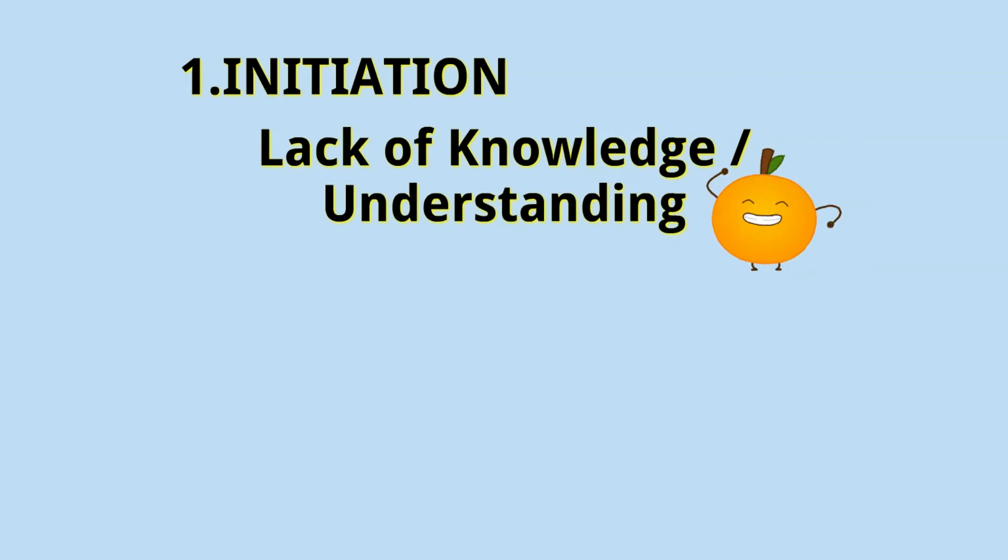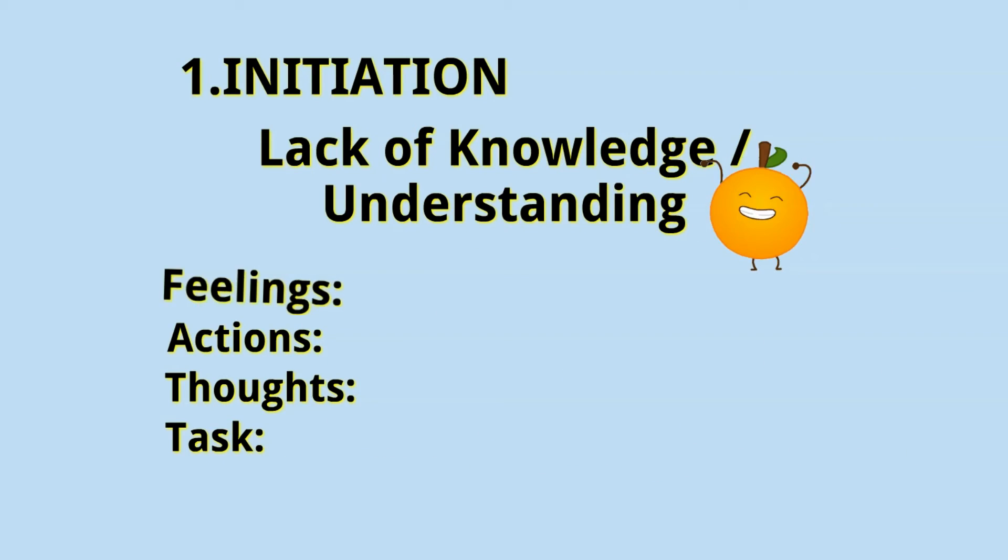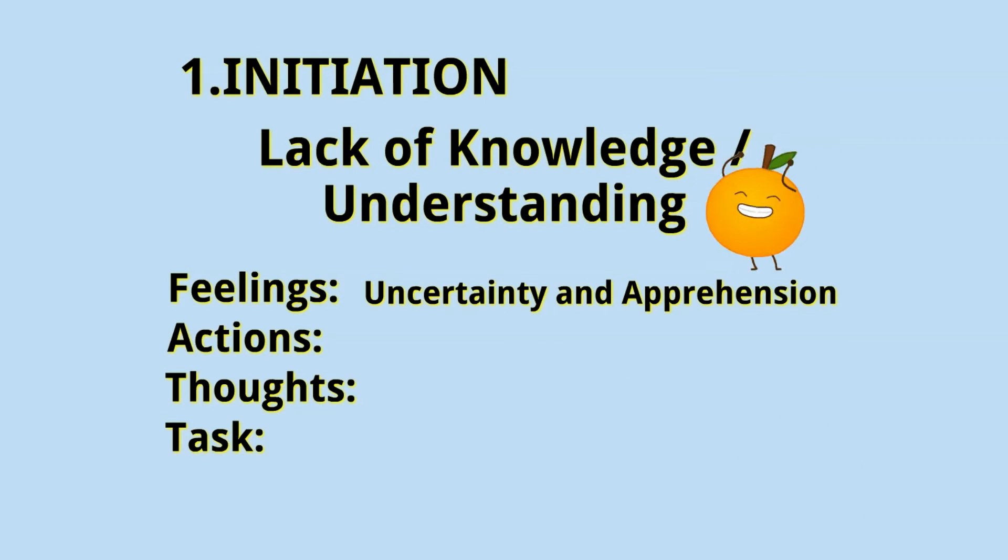Let us now proceed to our first stage of the ISP model. The first stage is called Initiation. Initiation is when a person becomes aware of a lack of knowledge or understanding. Remember, the flow of our discussion would be feelings, actions, thoughts, and tasks. Remember your feelings, your actions, your thoughts, and your tasks—that's what we'll discuss. Later I'll mention another stage and then we'll talk about what are the feelings, action, thoughts, and tasks happening in that stage.